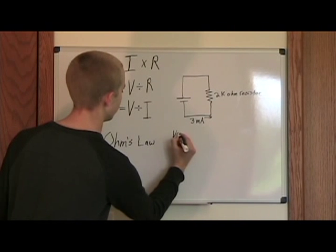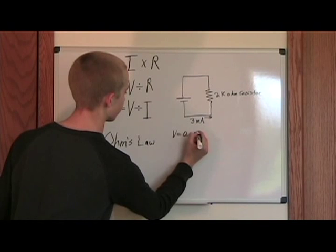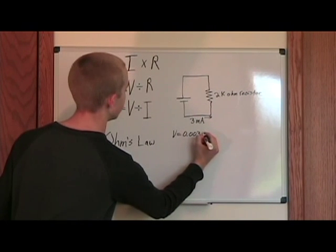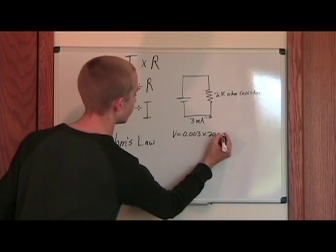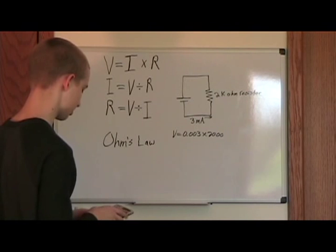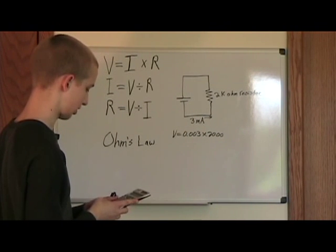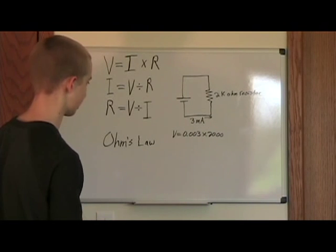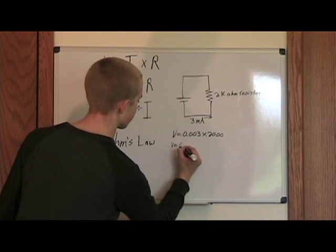Voltage equals current 0.003 times 2,000 ohms. 0.003 times 2,000 ohms equals 6, so V equals 6 volts.